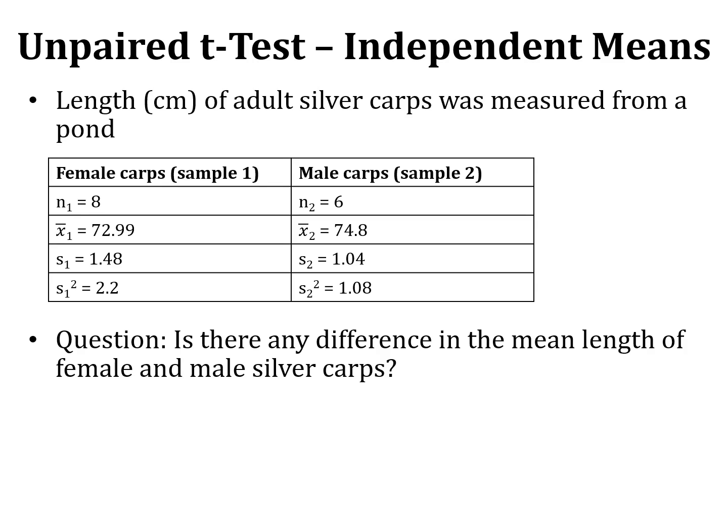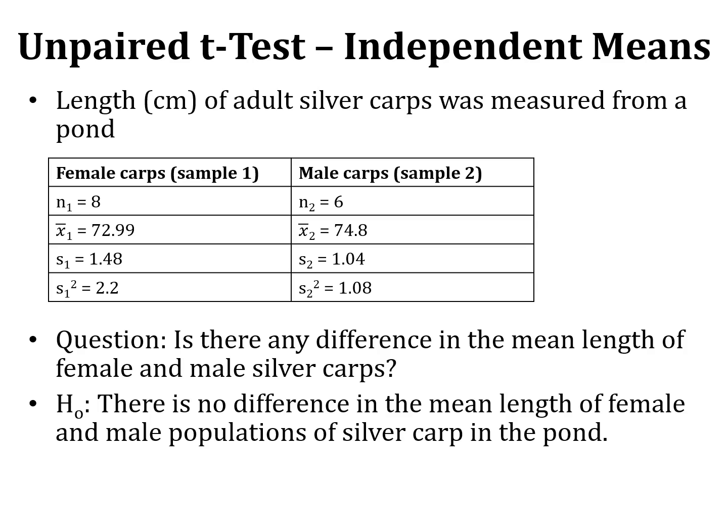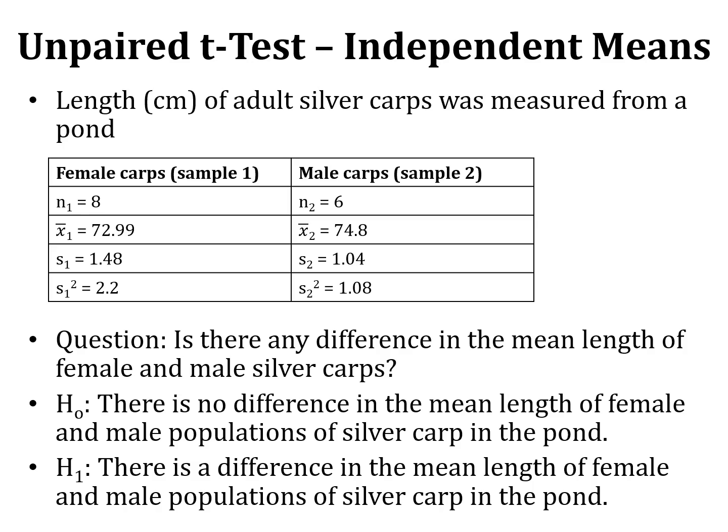The standard deviation is 1.48 cm for female silver carps and 1.04 cm for male silver carps. The variance is 2.2 cm for females and 1.08 cm for males. The female group is labeled sample number one because its variance is greater. Our question is: is there any difference in the mean length of female and male silver carps? The null hypothesis is there is no difference in the mean length; the alternate hypothesis is there is a difference.